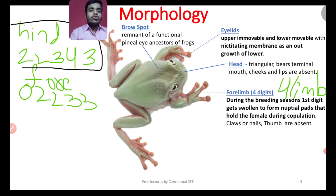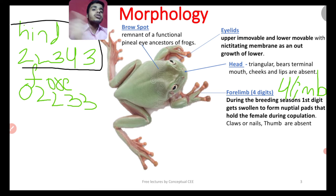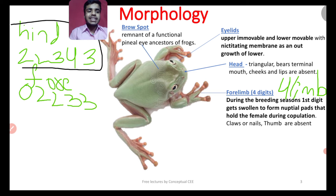In the forelimb, there is no thumb (thumb is absent). However, in the breeding season there is a swelling-type structure at the thumb region — that is called the nuptial pad or copulatory pad. We will mention it again in the reproductive system section.